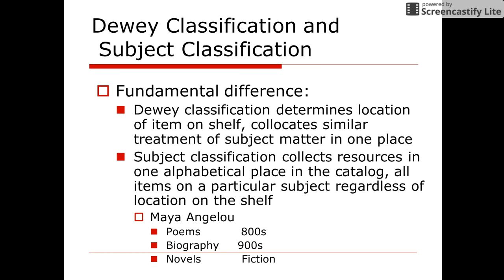So a person looking for information by or about Maya Angelou, for example, would find books in the 800s that pertain to poems, 900s about information such as biographies, and fiction which would pertain to novels.